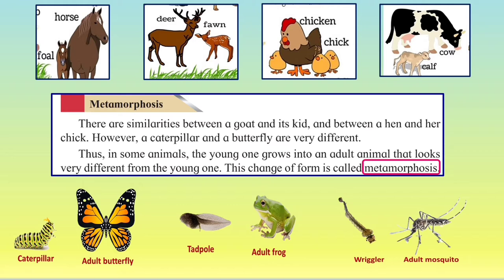You can see on the screen the horse and foal, deer and fawn, chicken and chick, cow and calf — the young ones look a lot like their parents. Whereas below, the caterpillar and butterfly, tadpole and adult frog, wriggler and adult mosquito — you can see there is a lot of difference. In some animals, the young one grows into an adult that looks very different. This change of form is called metamorphosis.